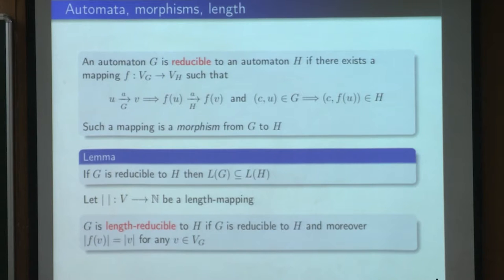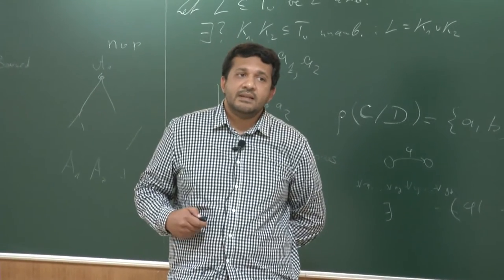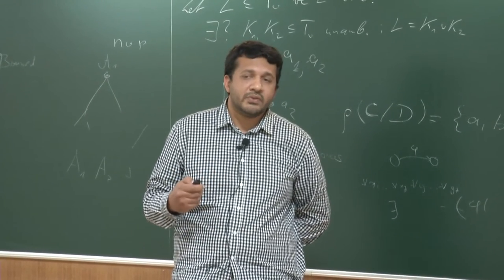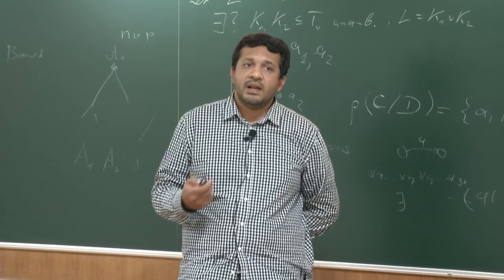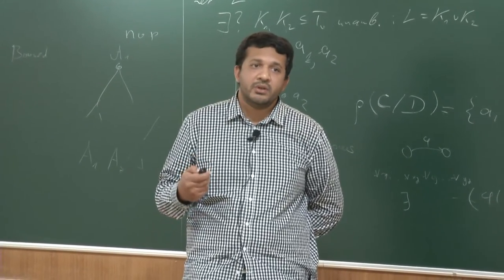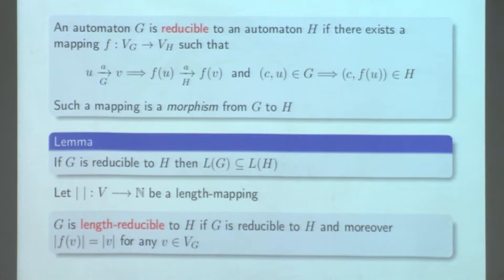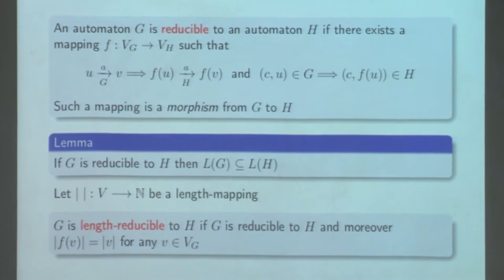Suppose moreover that G and H are over a common set of vertices — for example, a set of words — and that this set is equipped with a length mapping, that is, we have a notion of length. Then we say that G is length-reducible to H if G is reducible to H and moreover the reduction preserves the length.